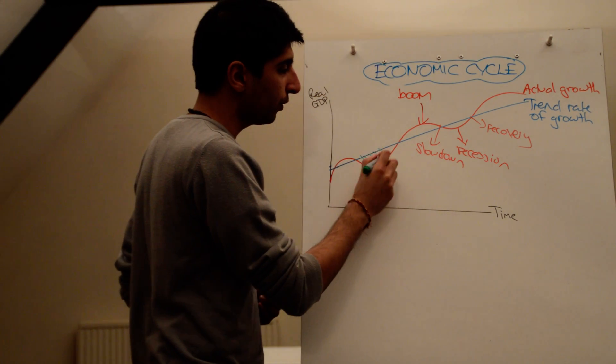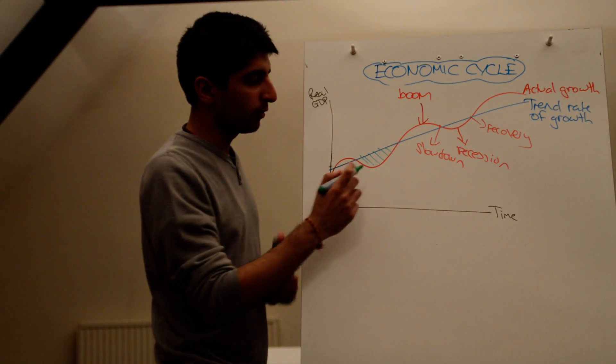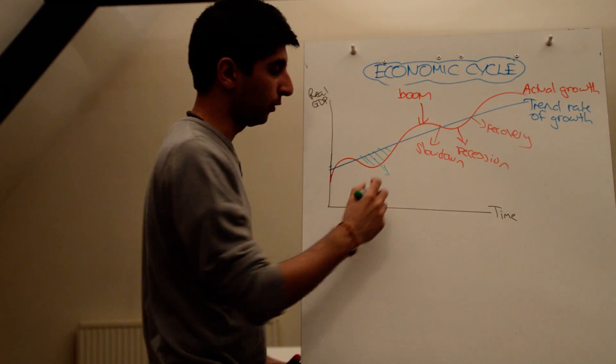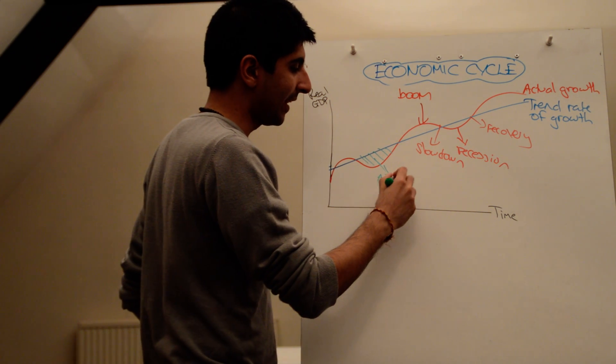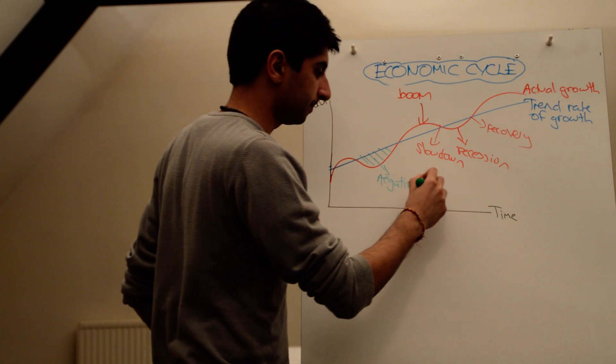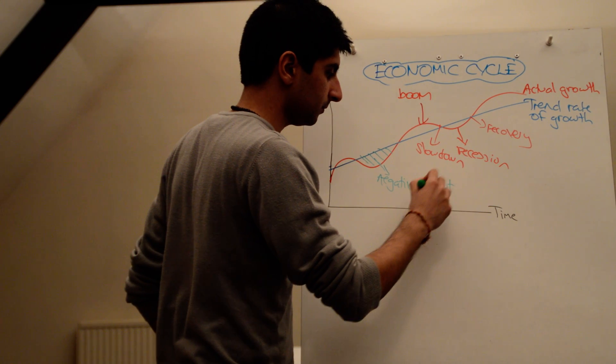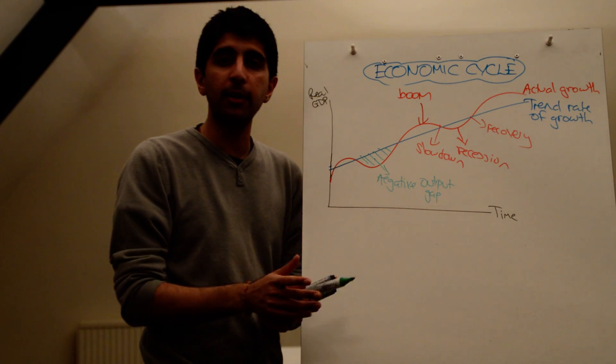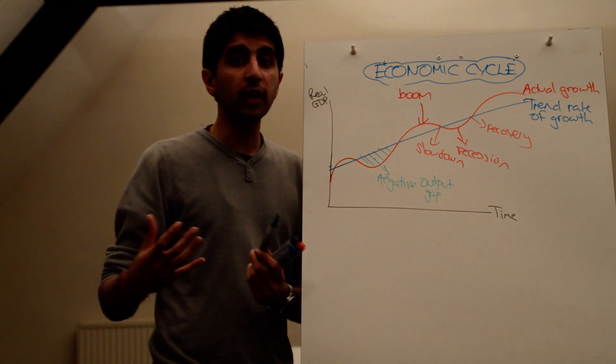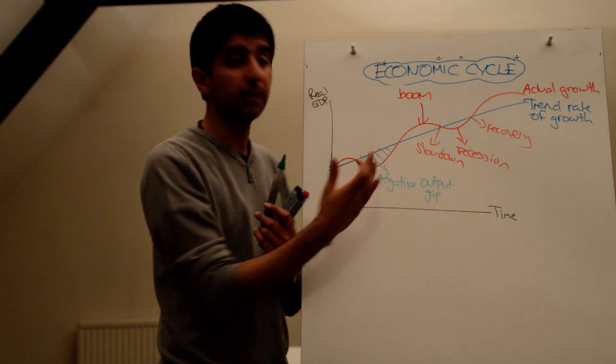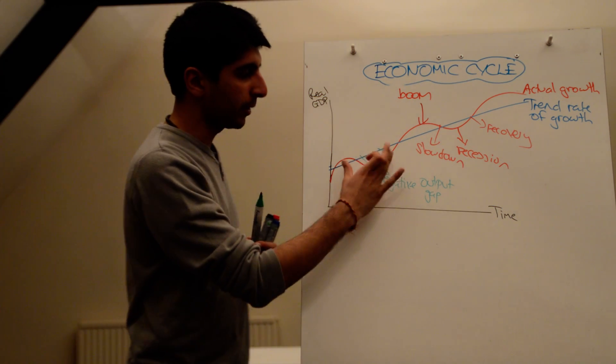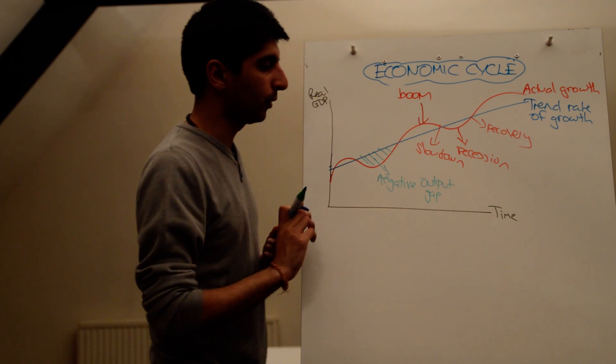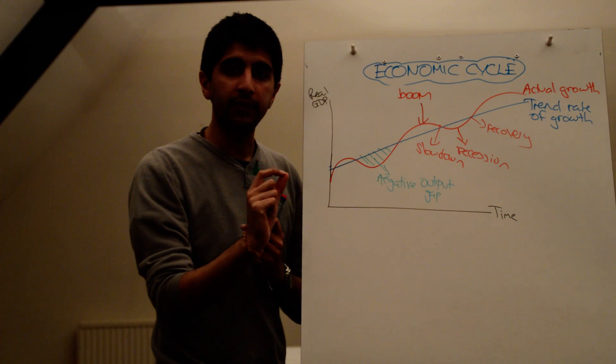So when actual growth is below the trend rate of growth, is below potential growth, we have what's called a negative output gap. Where there is spare capacity in the economy, spare factors of production like labour, like capital, which could be used up but that isn't being. So basically there is unemployment, you could say. Negative output gap, and actual growth is less than potential growth, operating inside the PPC.